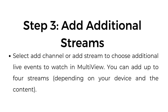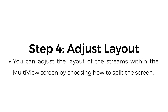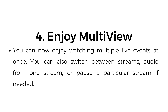Step three, add additional streams: select 'add channel' or 'add stream' to choose additional live events to watch in Multiview. You can add up to four streams depending on your device and the content. Step four, adjust layout: you can adjust the layout of the streams within the Multiview screen by choosing how to split the screen.